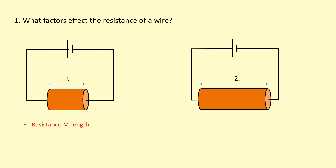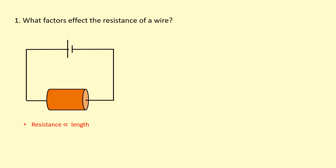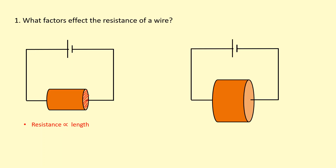We can say that resistance is directly proportional to length. Another factor that affects resistance is the cross-sectional area through which the current flows — in this case, this circle. The wire on the right clearly has a larger cross-sectional area.